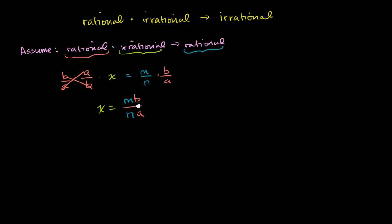Well, m is an integer, b is an integer, so this whole numerator is an integer. And then this whole denominator is some integer. So I've just, right over here, I have a ratio of two integers.